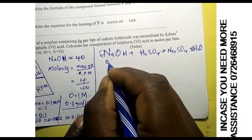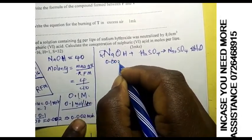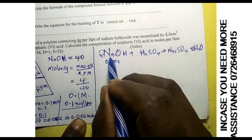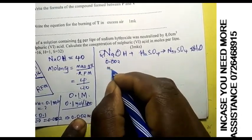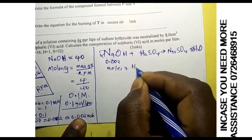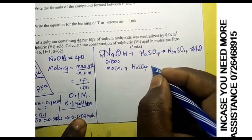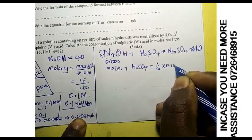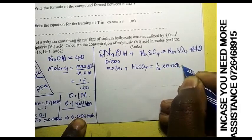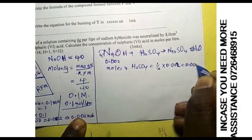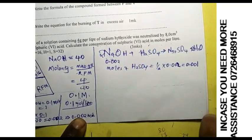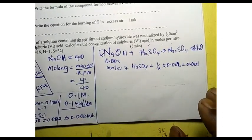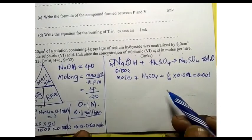We have 0.002 mol of sodium hydroxide that reacted. Since the mole ratio of sodium hydroxide to sulfuric acid is 2:1, the moles of sulfuric acid used equals one half times 0.002, which gives us 0.001 mol. So the number of moles of sulfuric acid is 0.001, using the stoichiometric mole ratio.